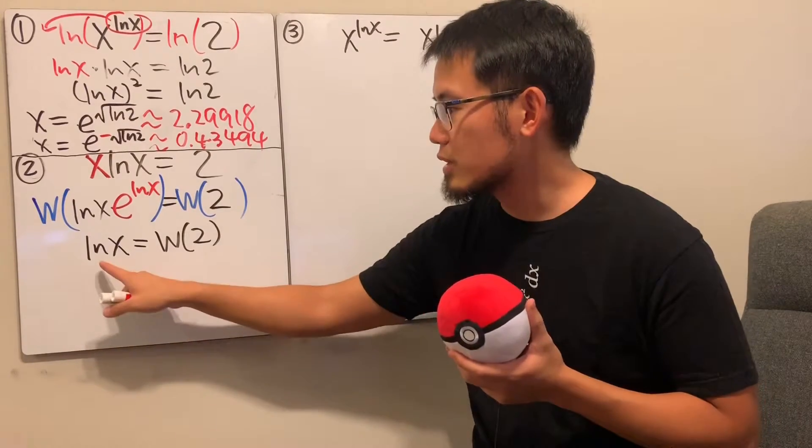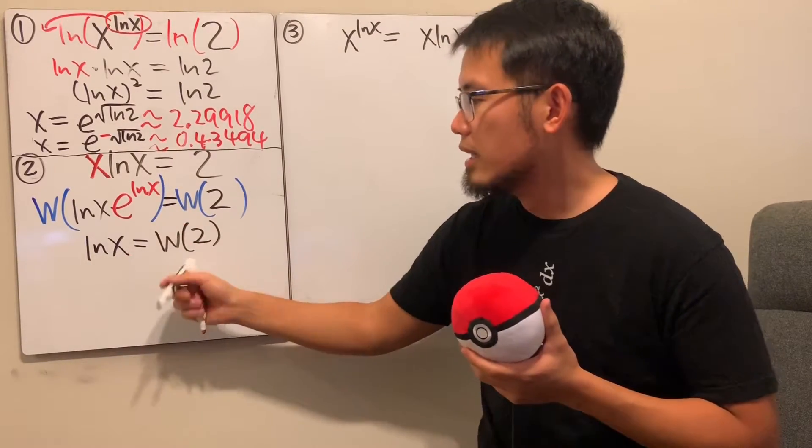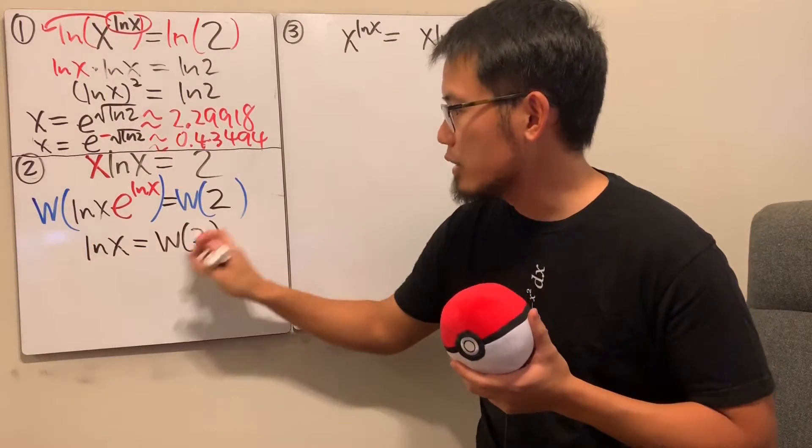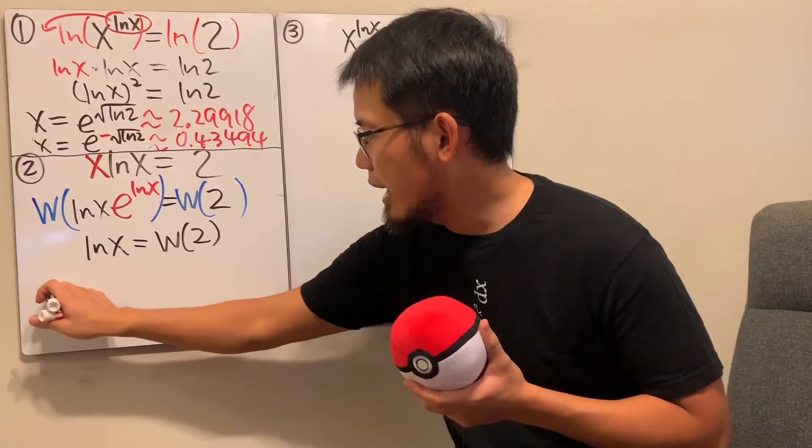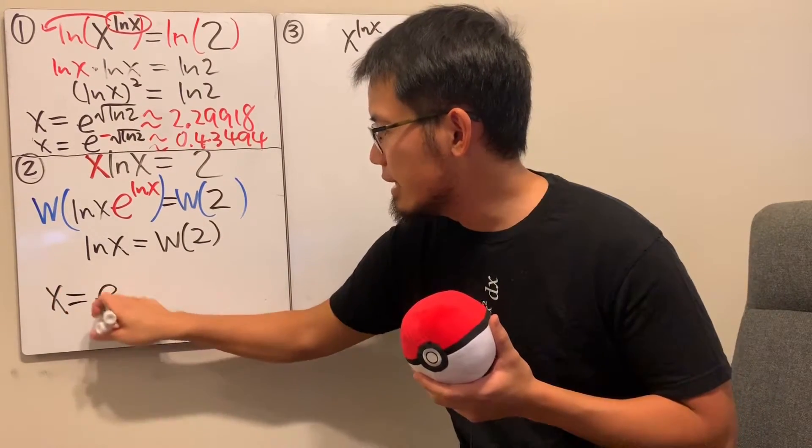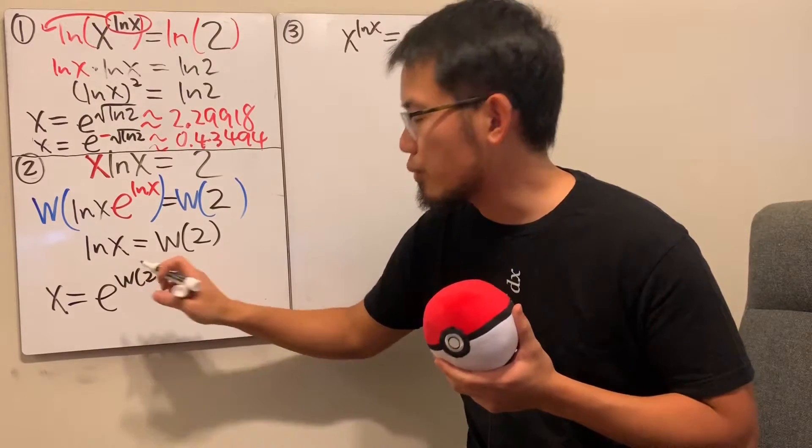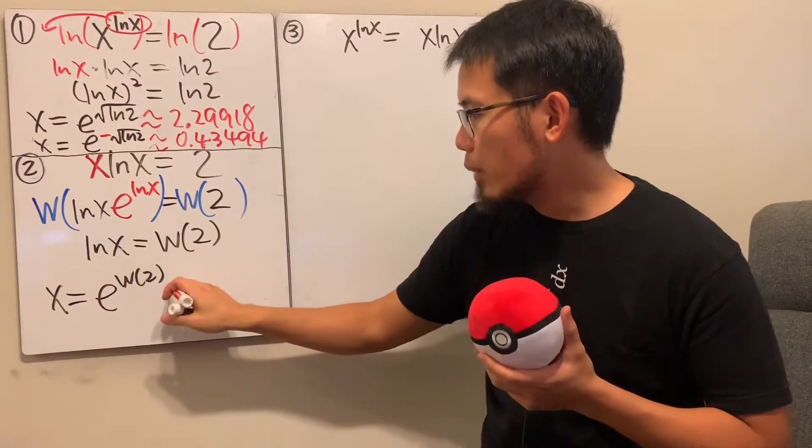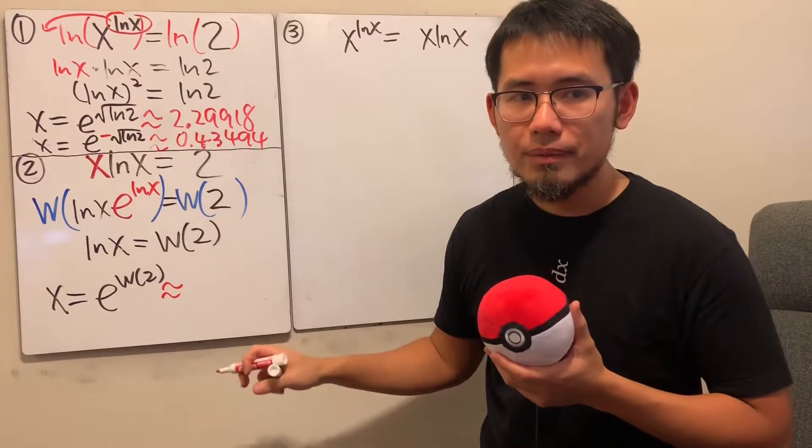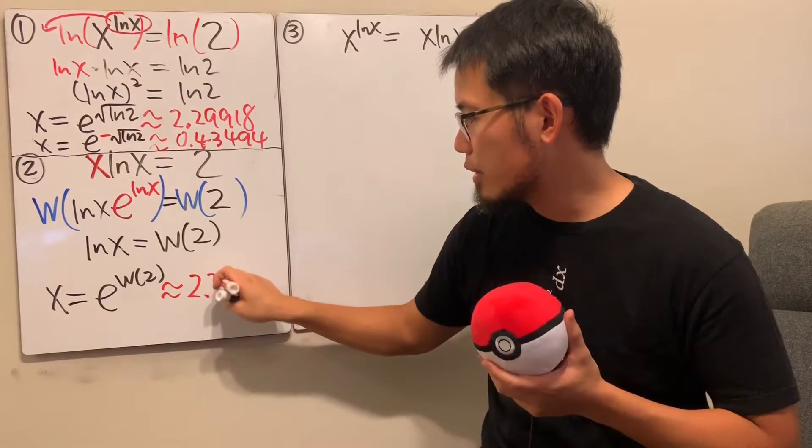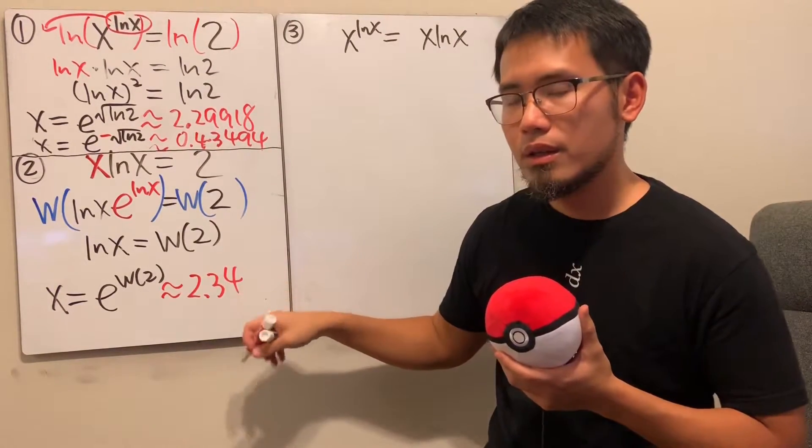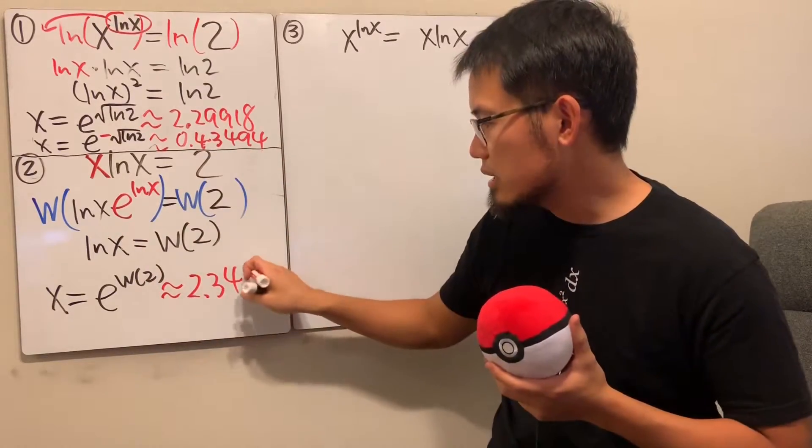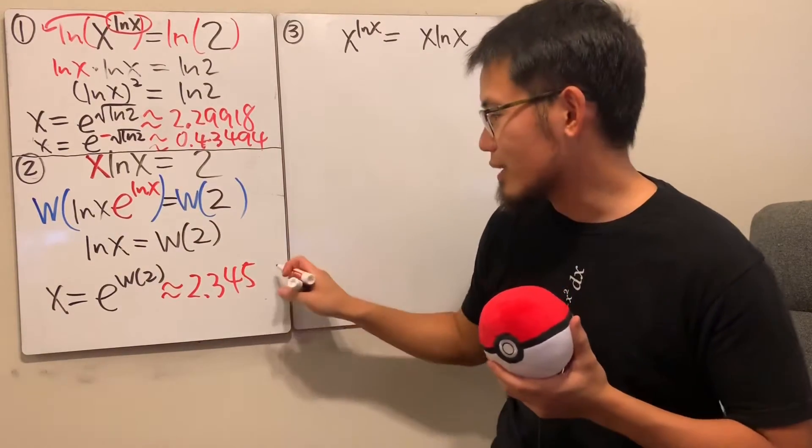By the way, though, we are not done yet, because in the end, we still have to isolate the x. So again, we just do e to the power, e to the power. In the end, we get x is equal to e to the W of 2 power. And I will tell you, this is approximately 2.34, yes, it's 5. The next one is 7.